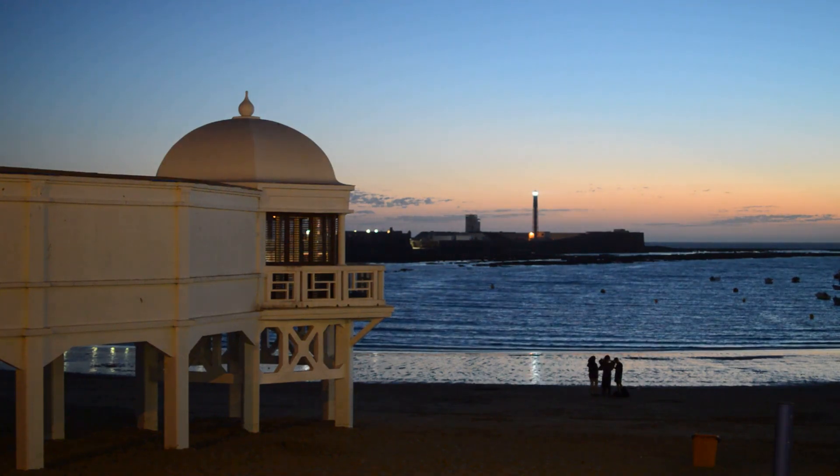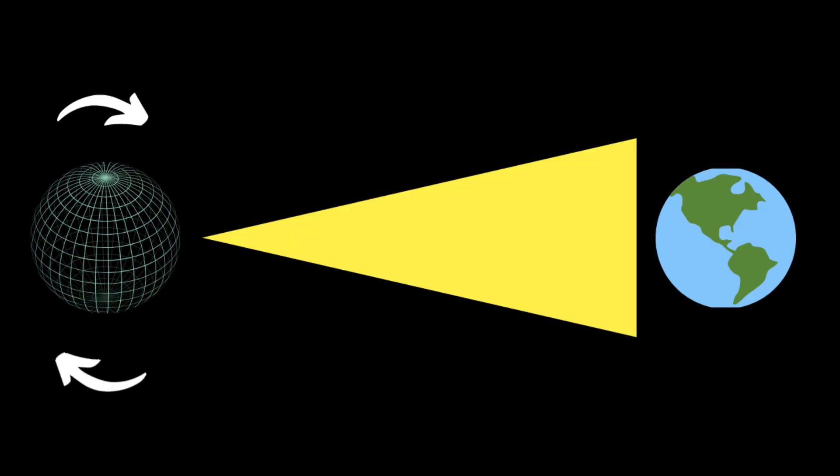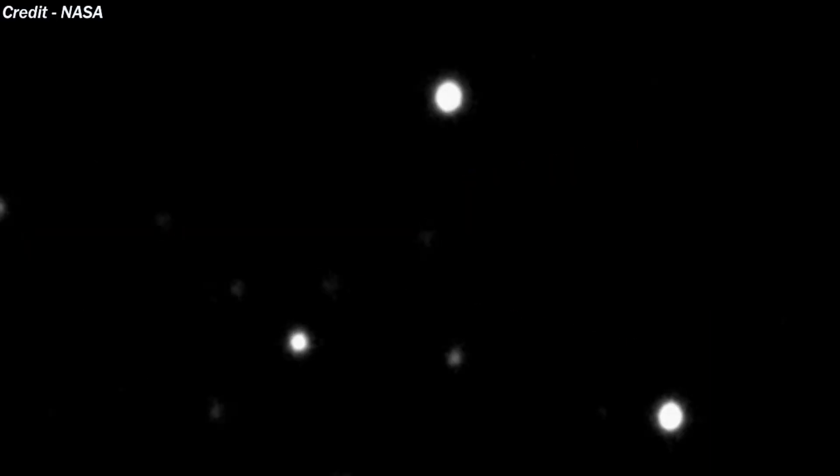This has also been termed as the lighthouse effect. Here is a diagram which shows how the lighthouse effect makes the pulsar look like it is being turned off and on as it is rotating rapidly. The beams would go to all directions but because the beams aren't scattered all around and are straight, it appears as if it is twinkling on and off.